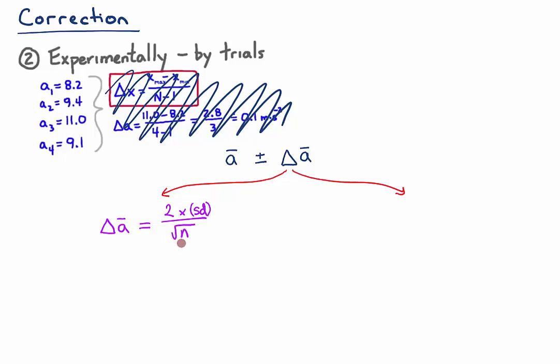When I divide by the square root of n, that's basically saying the more trials I do, the smaller this uncertainty will be. So I'll know that average value better.